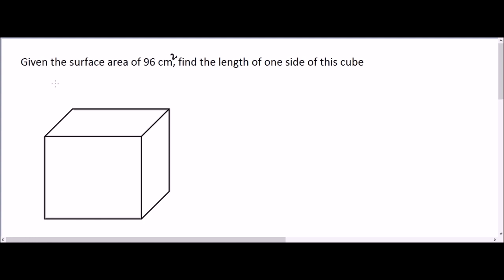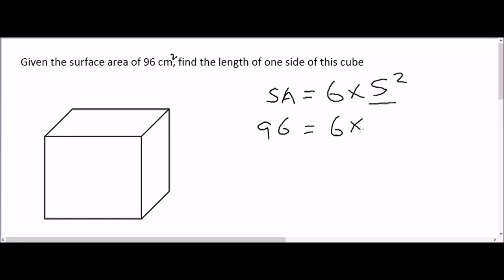We'll use the same formula: surface area equals 6 multiplied by s squared. In this question we're trying to find 's', and the surface area is already given as 96. So: 96 equals 6 multiplied by s squared. If you've learned how to make a subject of a formula in maths, you'll know how to solve this equation. On the right-hand side you have 6 multiplied by s squared, so you need to move the 6 to the left-hand side.